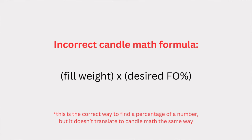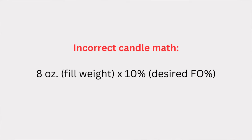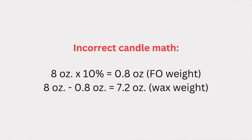A very common way I see people figuring out how much wax and fragrance oil they need is to find the fill weight of their candle and multiply that by their desired fragrance oil percentage. For instance, with an eight-ounce fill weight, you take eight and multiply it by 10%. That gives you 0.8 ounces of fragrance oil. Then you subtract that from the fill weight to get 7.2 ounces of wax. In theory, it looks like the correct formula.